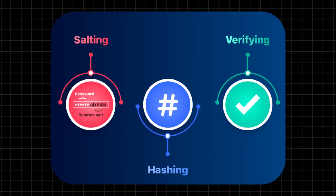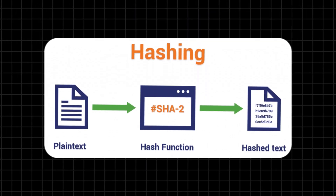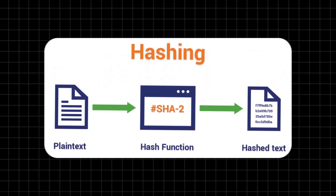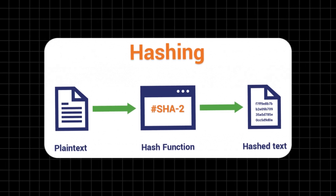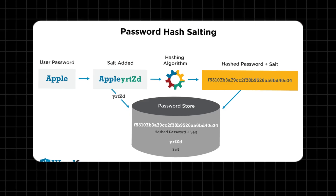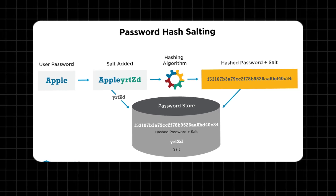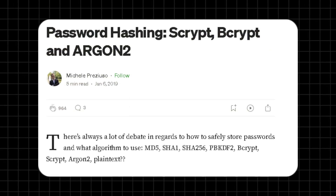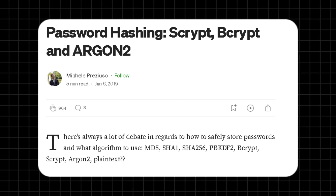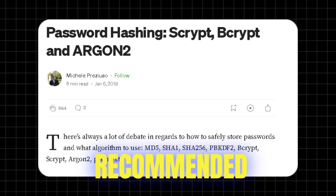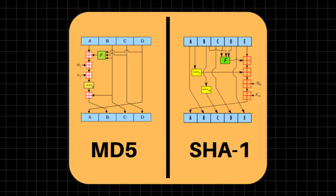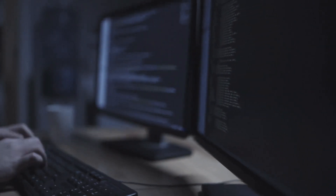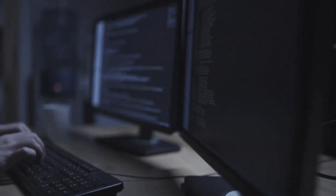Storing passwords securely involves hashing and salting. Hashing converts passwords into a fixed-length string of characters, making them unreadable without the proper key. Salting adds random data to each password before hashing, ensuring that even identical passwords have unique hashes. Modern algorithms like Argon2id, bcrypt, and PBKDF2 are all recommended, as older ones like MD5 and SHA1 are no longer secure. It's like adding a unique lock to each key, making it much harder for intruders to break in.